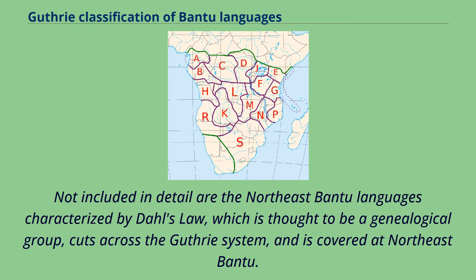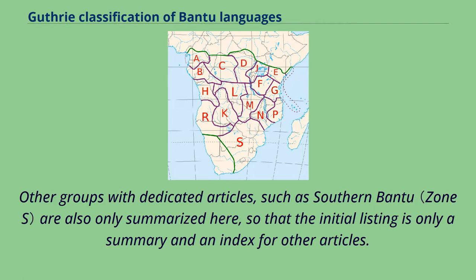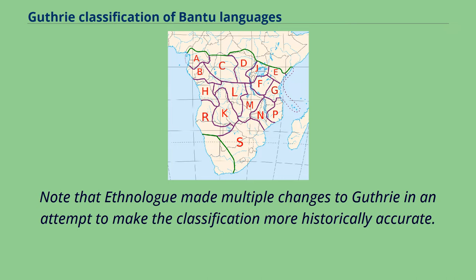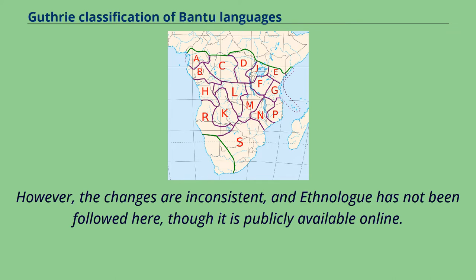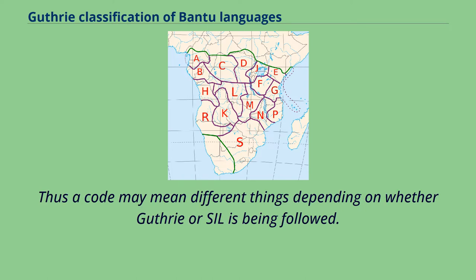Not included in detail are the Northeast Bantu languages characterized by Dahl's Law, which is thought to be a genealogical group, cuts across the Guthrie system, and is covered at Northeast Bantu. Other groups with dedicated articles, such as Southern Bantu, are also only summarized here, so that the initial listing is only a summary and an index for other articles. Note that Ethnologue made multiple changes to Guthrie in an attempt to make the classification more historically accurate. However, the changes are inconsistent, and Ethnologue has not been followed here, though it is publicly available online. Thus a code may mean different things depending on whether Guthrie or Ethnologue is being followed.